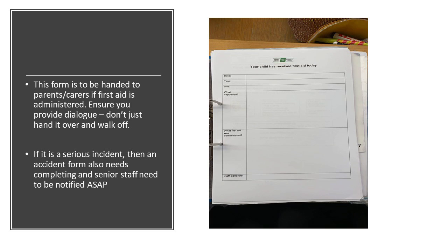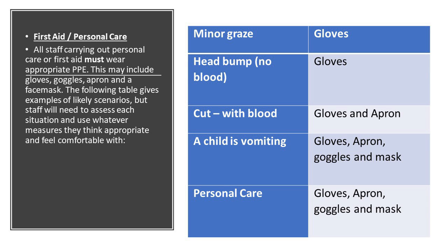Within the folder there is a first aid section. If you carry out first aid on a child, use the correct PPE and notify parents afterwards — don't just hand the form over and walk away; explain what happened. If it's a serious incident, an accident form must also be completed and senior staff notified straight away. There is a chart for the correct PPE to use: for a bump to the head with no blood, gloves only; for a child vomiting, gloves, apron, goggles, and mask.